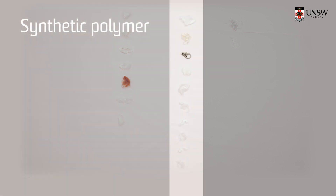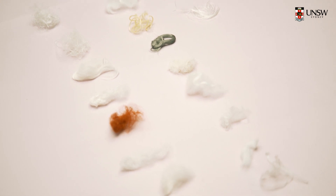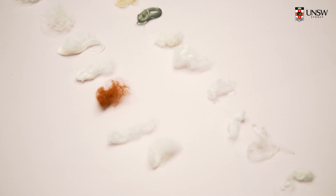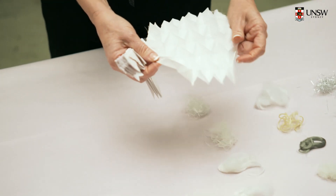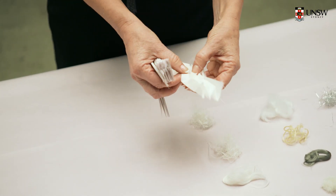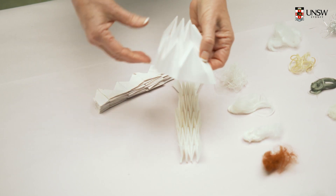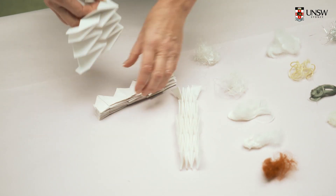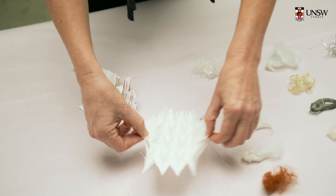Synthetic fibres are the ones that are made from polymers, largely petroleum-based. A property of polyester is that it's very heat-sensitive and can be heat-set into permanent shapes. Because they're heat-sensitive, you can put them into a mould and steam them to create a permanent pleat.